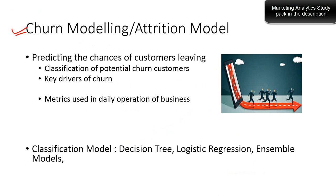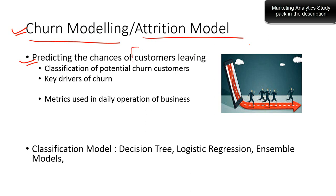The first problem is knowing the churn — knowing which customers are going to leave the company, no longer buying your products and services but going to someone else. This is known as churn modeling, also known as attrition modeling. It is a predictive model about predicting the chances of customers leaving, using probability models to find out the probability that a customer will be leaving. It's basically a classification of potential churn customers from the rest of the group.